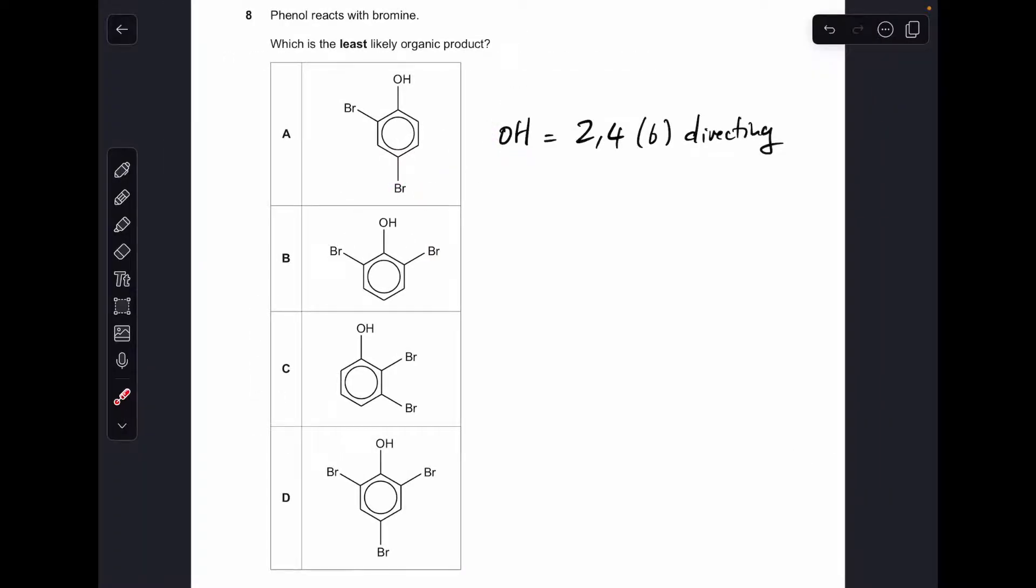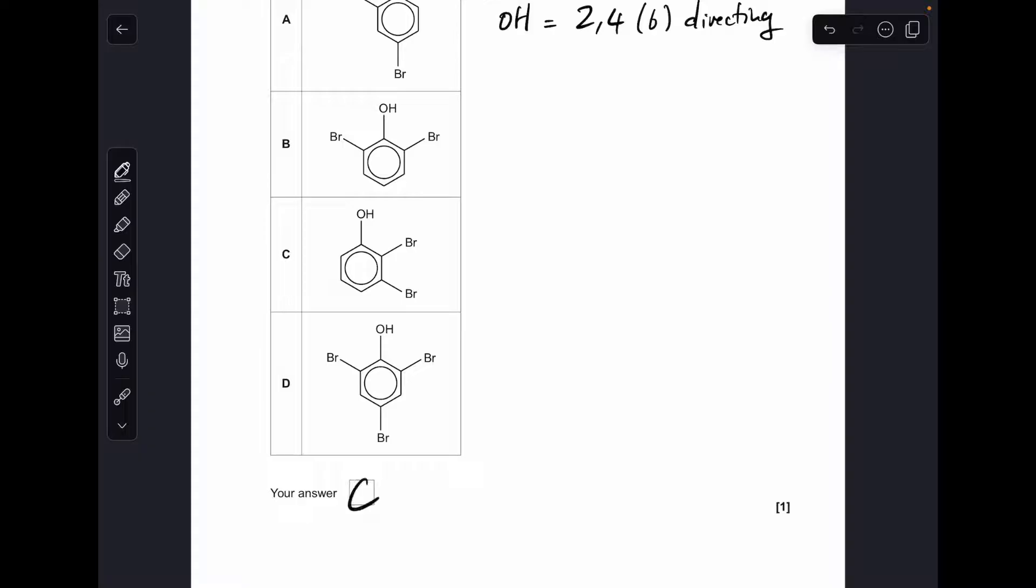Question eight, just remember the OH group is two four, I've put six in brackets there because if it's tri substitution the other substitution position will be number six. So two four six directing. What have we got? In A two and four, two and six, two and three. So three is not one of these, C was the answer. There you've got your tri substitution two four six, so C is the answer there.